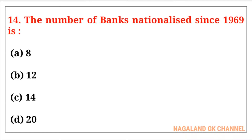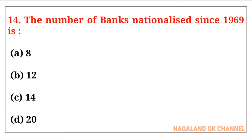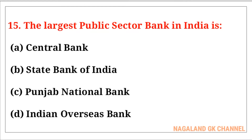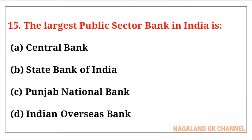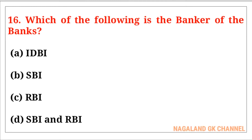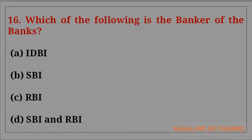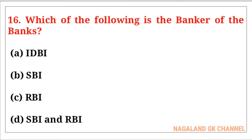Question number fifteen: The largest public sector bank in India is — the correct answer is option number B, that is State Bank of India. Question number sixteen: Which of the following is the banker of the banks? The correct answer is option number C, that is RBI — Reserve Bank of India.